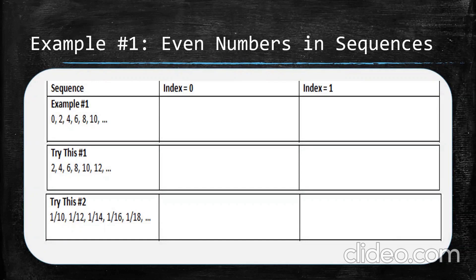Remember, your index is an integer, usually starting at 0 or 1. Example number 1 is a sequence that is basically all of the even numbers. Even numbers are usually like 2n — so 2 times 1 is 2, 2 times 2 is 4, 2 times 3 is 6, and so on. So 2n will give you even numbers, and 2n plus 1 will give you odd numbers.